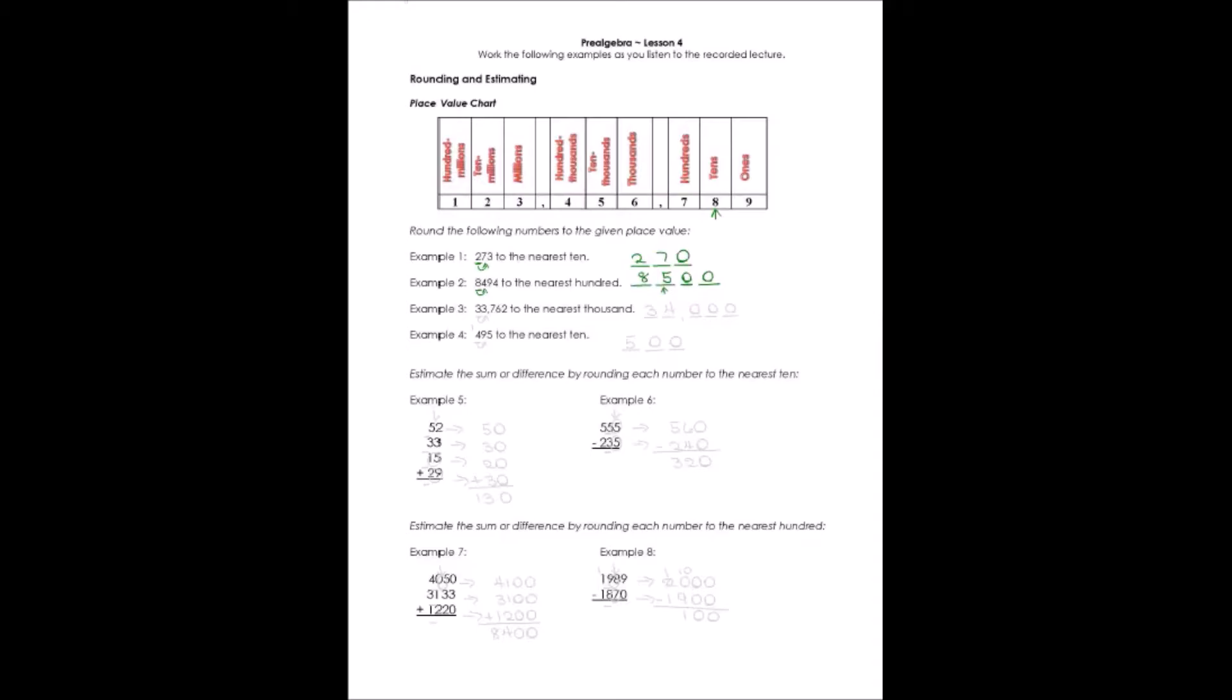33,762, they want us to round to the nearest thousands. First, we found the thousands place. It is our second 3. Then we look to the digit directly to the right. Everything to the right of the number I'm rounding to becomes a 0. I look at my 7 and I say, that means it's bigger than a 5. I'm going to have to add 1 to the 3, making it a 4. And then the first 3 would just stay the same. The number would be 34,000.